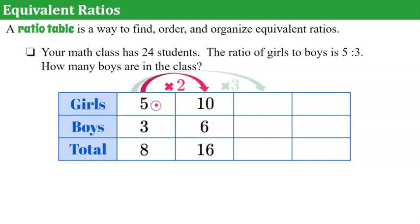Now let's look at multiplying by three. Five times three is 15. Three times three is nine. Fifteen plus nine is twenty-four. Also, eight times three is twenty-four. So notice our part to part has a relationship with a part to whole.